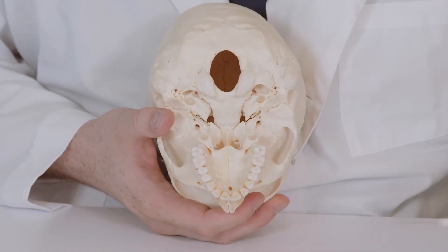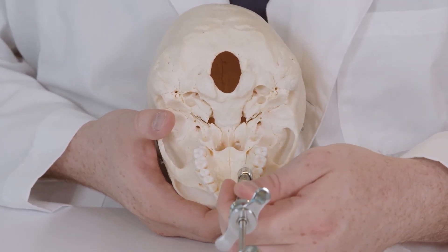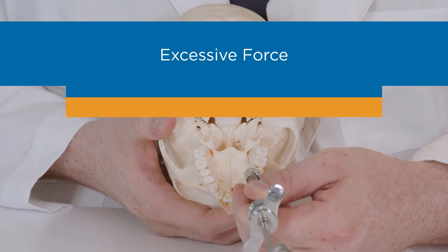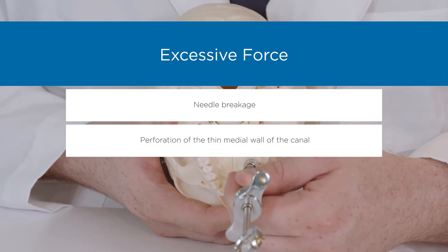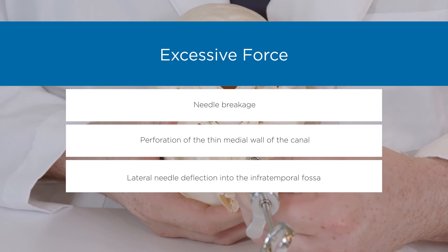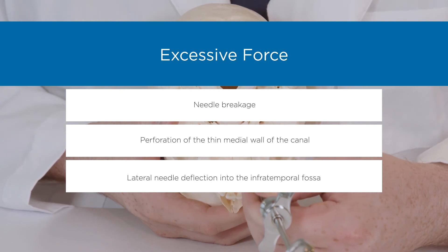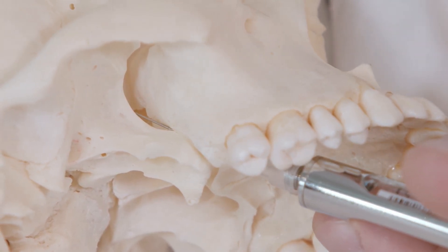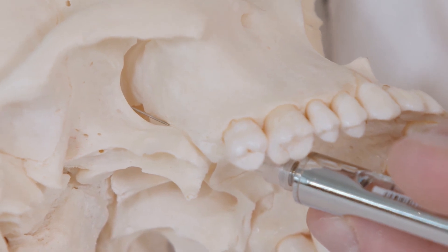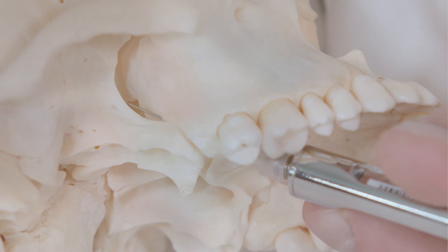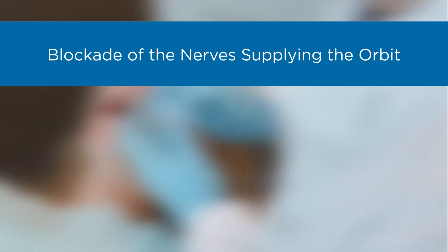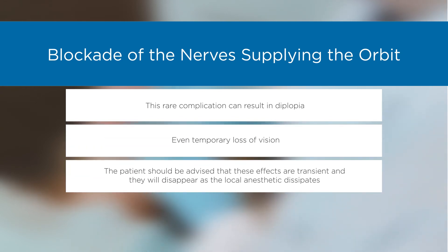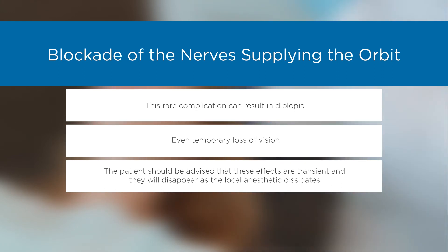Approximately one-tenth of canals have bony obstructions that may prevent passage of the needle; if the canal cannot be negotiated, the injection should be aborted. Excessive force can lead to needle breakage, perforation of the thin medial wall of the canal, or deflection laterally into the infratemporal fossa. If the needle pierces the medial wall and enters the nasal cavity, air will be drawn back during aspiration. If the needle is advanced too high in the pterygopalatine fossa, blockade of the nerve supplying the orbit can occur, potentially resulting in diplopia or temporary loss of vision—effects that are transient and will resolve as the anesthetic dissipates.